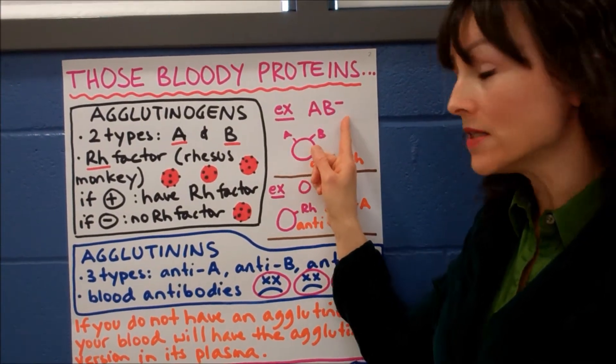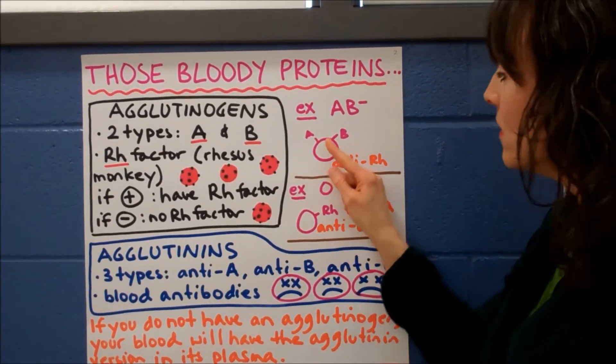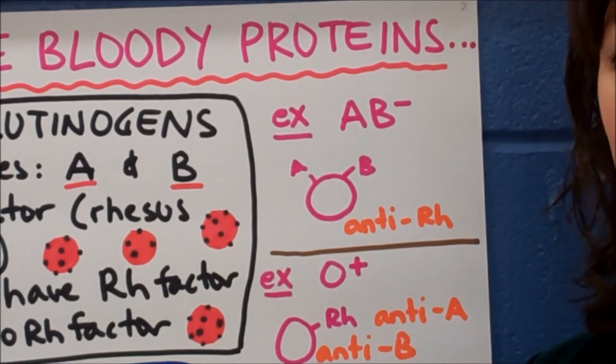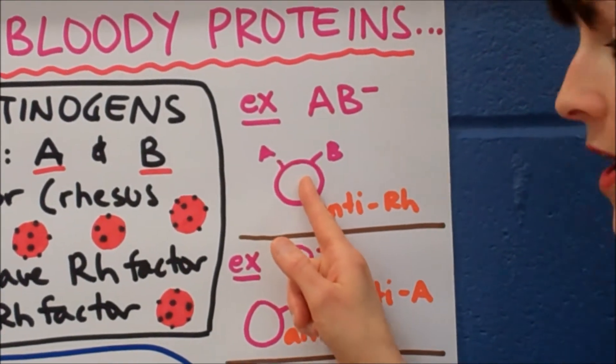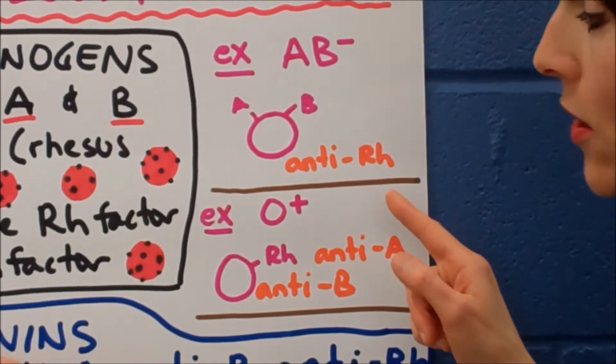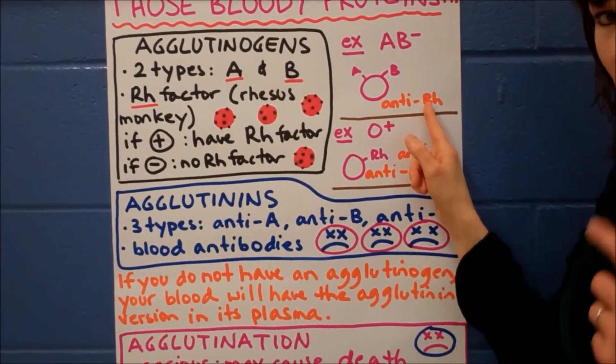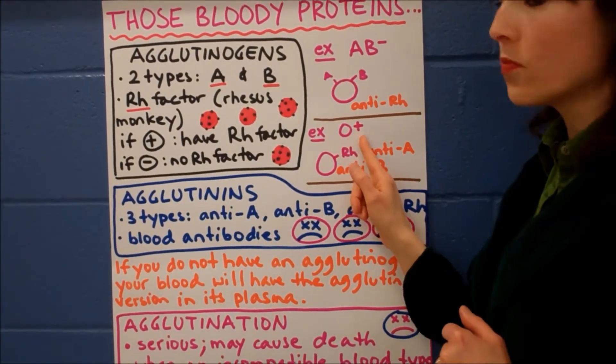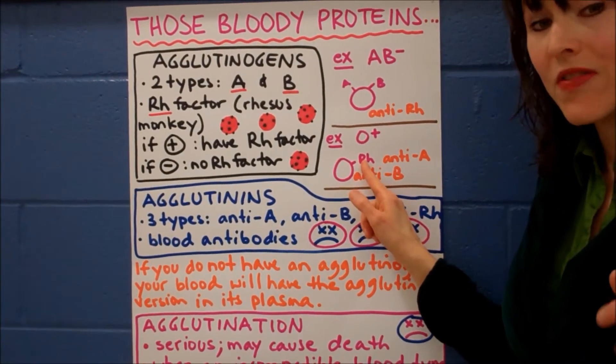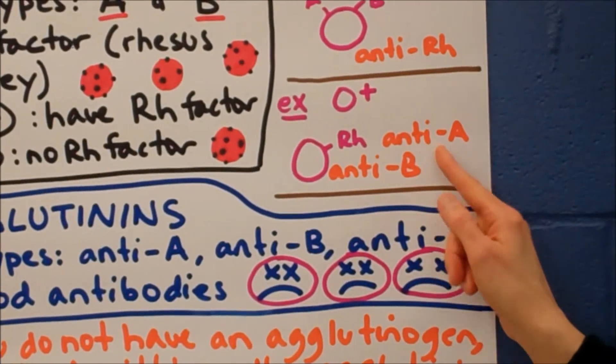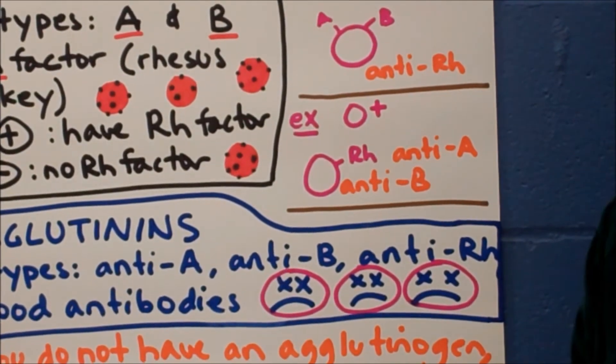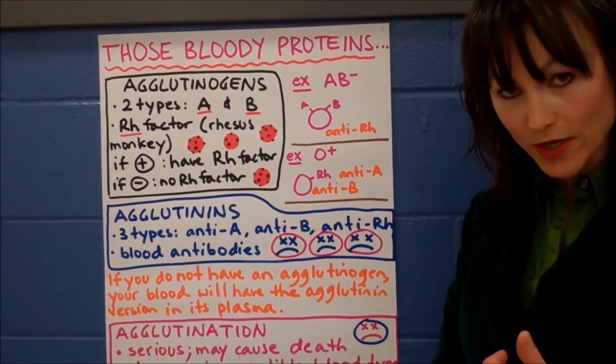So this is an example here. Let's say you are blood type AB-. You would have, this represents a red blood cell. You would have agglutinogen A and agglutinogen B. Now these agglutinogens are all around your membranes. But this is just to symbolize, to simplify. In your blood, flowing in your blood is the opposite protein in the agglutinin form. So anti-RH. Let's look at another example. Let's say you are blood type O-plus. On the membrane of your red blood cells, you have Rh only. Then in your blood, you have anti-A and anti-B, and these two are agglutinins. Whenever you see anti-something, it means the agglutinin, and that's in the plasma of the blood.